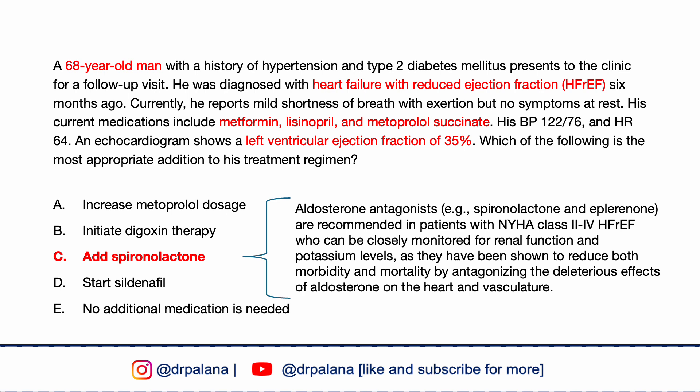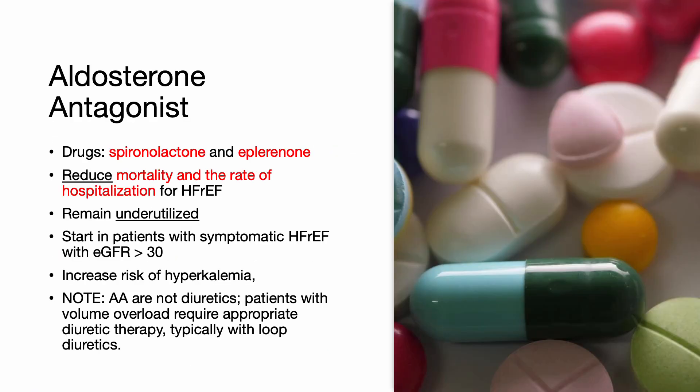Adding spironolactone is likely to improve this patient's clinical status and potentially improve prognosis by further reducing cardiac remodeling and preventing heart failure hospitalizations. Aldosterone antagonists have been shown to reduce mortality and hospitalization rates in symptomatic HFrEF across NYHA class 2 to 4, as well as in those recovering from acute MI. Despite their demonstrated benefits, they remain underutilized in the United States. Guidelines advocate initiation in patients with symptomatic HFrEF with an estimated GFR of at least 30.